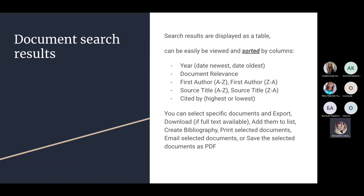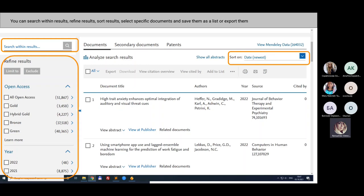Saving selected documents as a PDF means you have chosen a list of documents relevant to your research and want to share them with a colleague. You can select all these documents and save them as a PDF file that includes the title, journal name, author, and abstract — but not the full text. It's a list you can print or save for yourself or to share. After searching and getting results, you can refine them, sort them, select specific documents, and save them as a list or export them.